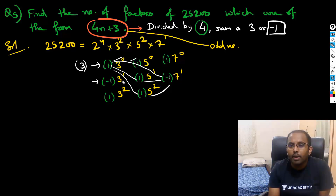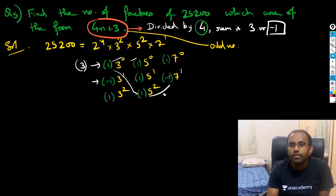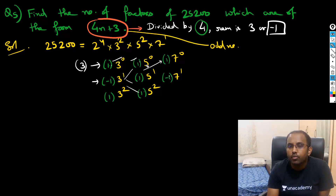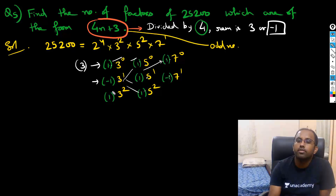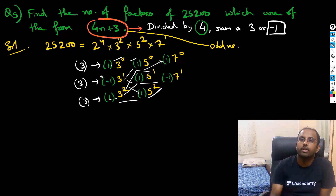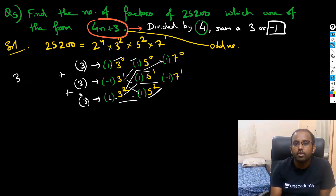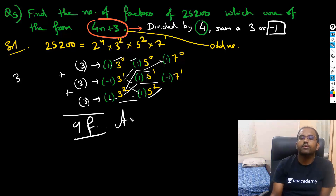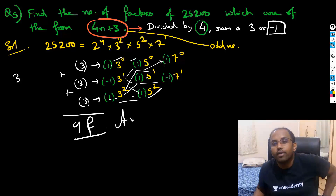Similarly, with minus 1 from 3's bracket and minus 1 from 7's bracket, I can again get minus 1 overall in 3 ways — for example: 3 into 1 into 1, 3 into 5 into 1, 3 into 25 into 1. These factors will also be of the form 4n plus 3. And with the third group, again 3 cases. So 3 plus 3 plus 3 gives a total of 9. With 9 factors is the answer. These 9 factors are factors of 25,200 and are of the form 4n plus 3.